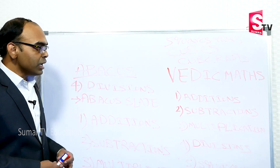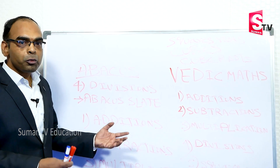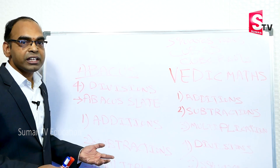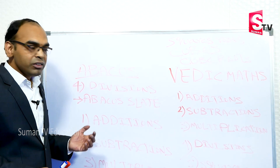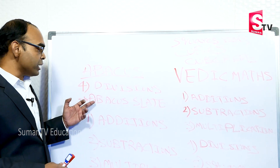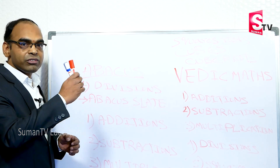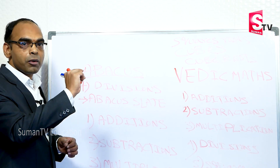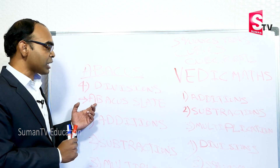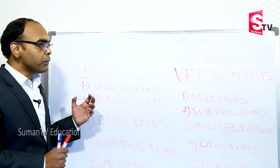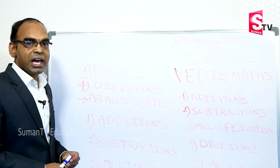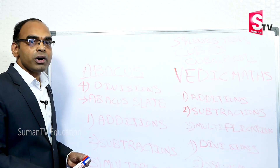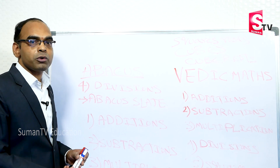For example, let's take addition: 32 plus 5. Instead of depending on gadgets, in Abacus we will depend on the Abacus slate — we will move through the operations and calculate using the slate. But coming to Vedic Math, we will not depend on any slate. We will perform any operations with the help of our mind.